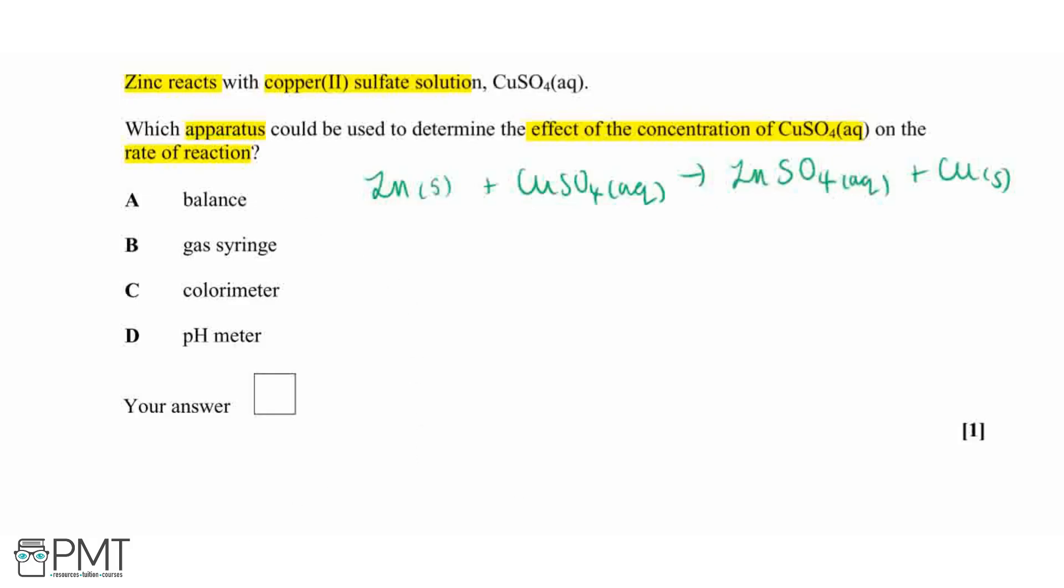What we can see straight away is that we don't have an acid base reaction. So we don't have a proton donor or a proton acceptor. Therefore using a pH meter will not help us to determine the effect of the concentration of copper sulfate on our rate of reaction because we're not going to be getting any significant changes of pH in this reaction.